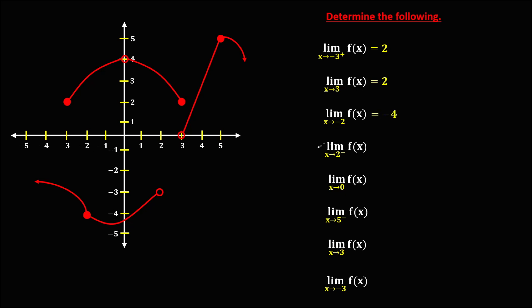Then for this limit, the limit of f of x as x approaches positive 2 from the left. This is x equals positive 2, and since we are approaching from the left, this is the left side limit. Therefore, the limit exists and the limit is equal to negative 3.